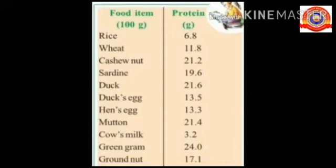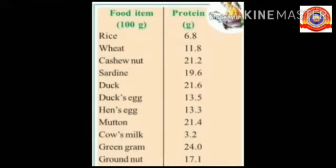100 grams of rice contain 6.8 g protein; 100 g of wheat contain 11.8 g; 100 g of cashew nut contain 21.2 g; 100 g of sardine contain 19.6 g; 100 g of duck contain 21.6 g; 100 g of duck's egg contain 13.5 g; 100 g of hen's egg contain 13.3 g; 100 g of mutton contain 21.4 g; 100 g of cow's milk contain 3.2 g; 100 g of green gram contain 24 g; 100 g of groundnut contain 17.1 g. From this table we can analyze that green gram contains plenty of protein.